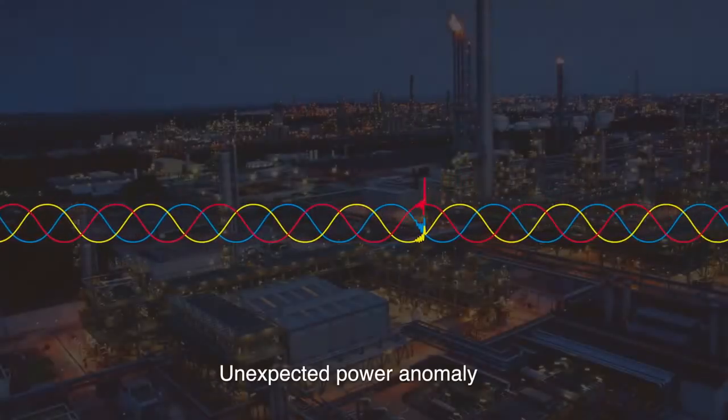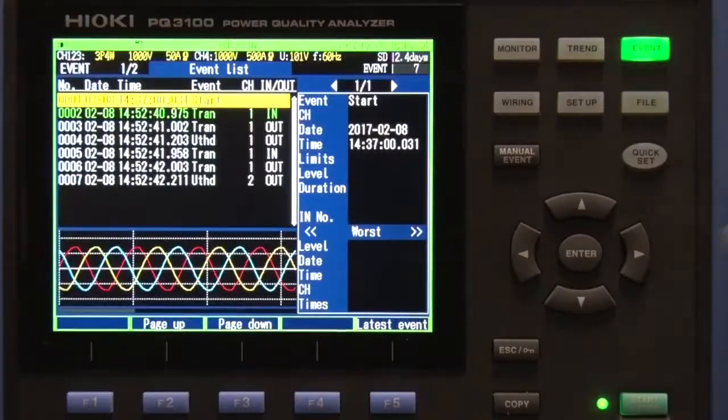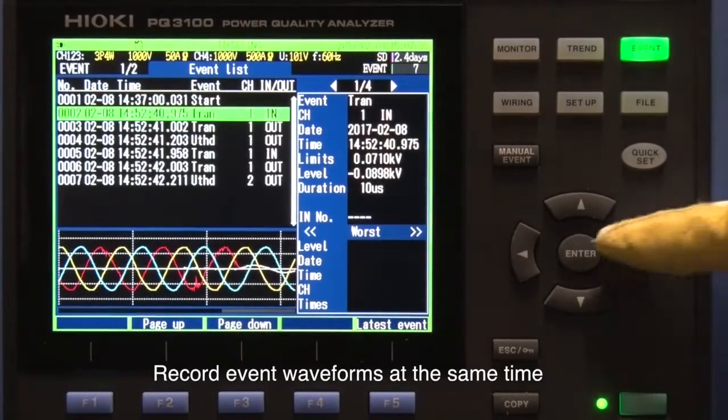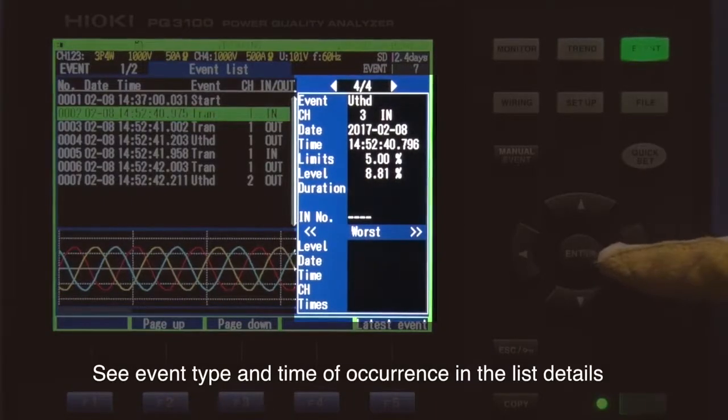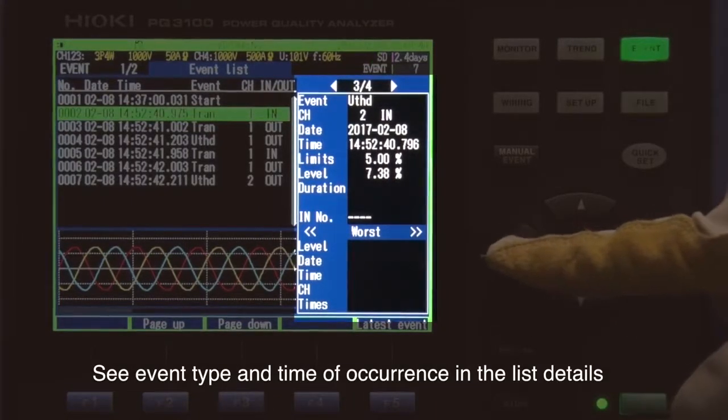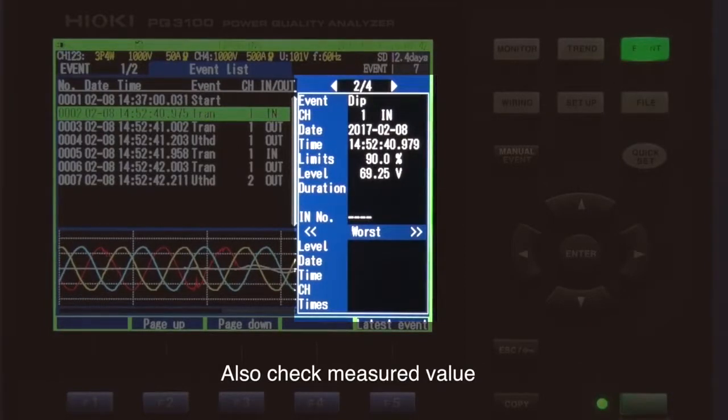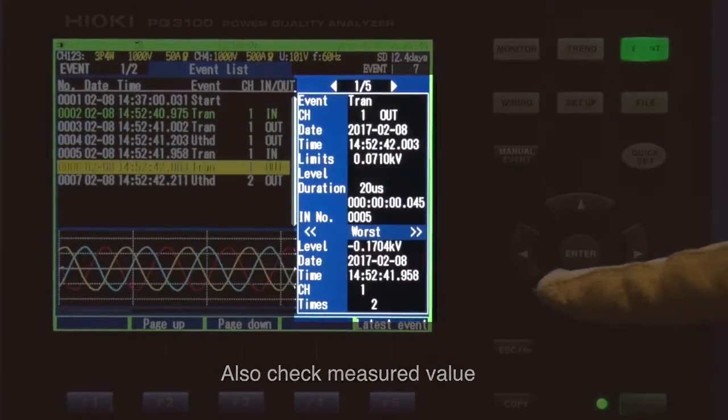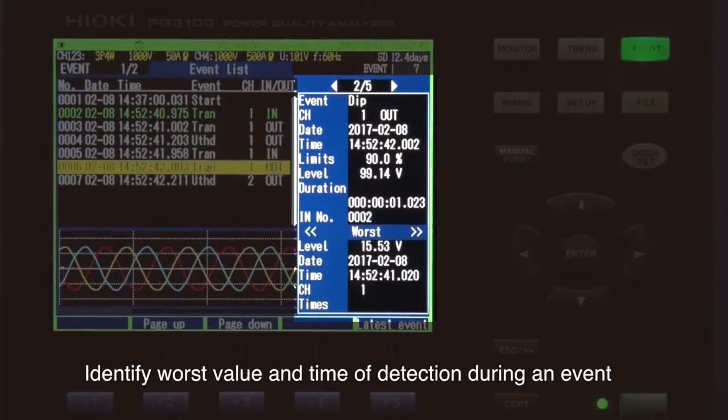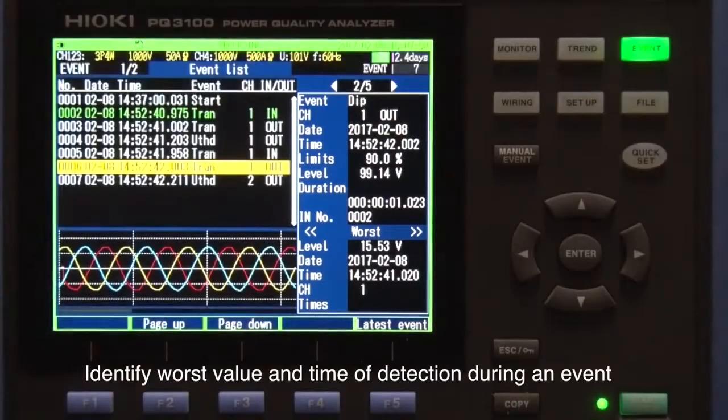Here, a power anomaly has occurred. Record the details of the anomaly as well as the event waveform at the same time. View the event type, time of occurrence, as well as the measured value in the event list details. You can also identify the worst value as well as the time it occurred during an event.